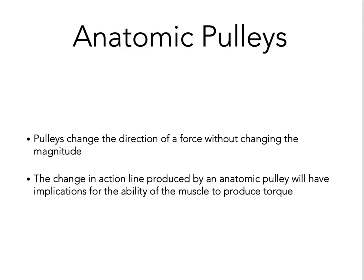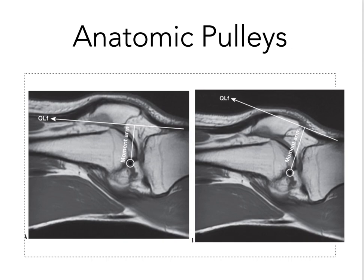Anatomical pulleys change the direction of a force without changing the magnitude of the force. They do change the mechanical advantage, allowing the muscle to produce greater torque around the joint. A common example is the quadriceps muscle over the patella, a sesamoid bone. The patella deflects the action line further away from the axis of rotation, increasing the moment arm of the muscle force so that a force of the same magnitude produces greater torque. Sesamoid bones lie where tendons pass over joints and function to change the direction of the muscle or tendon action line.